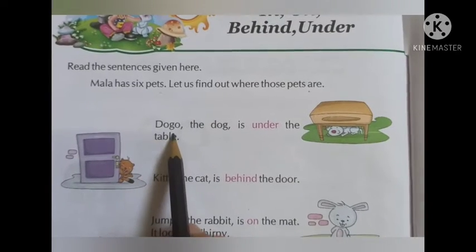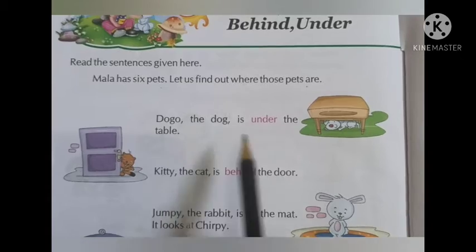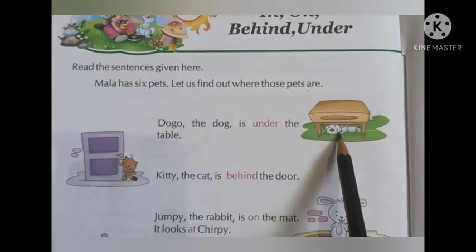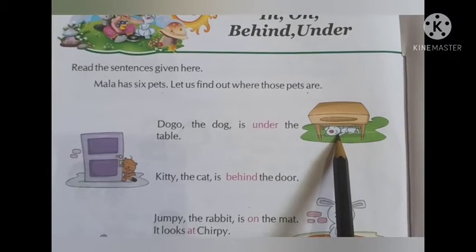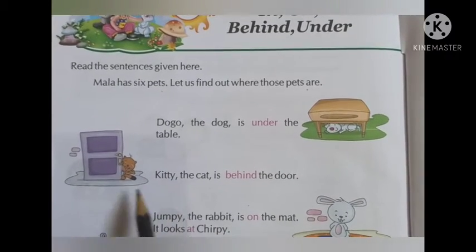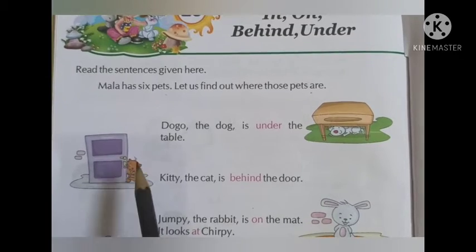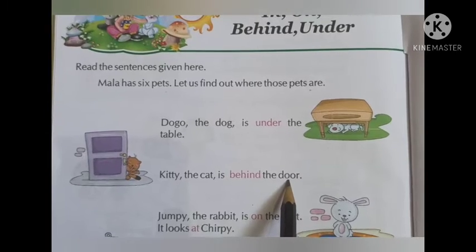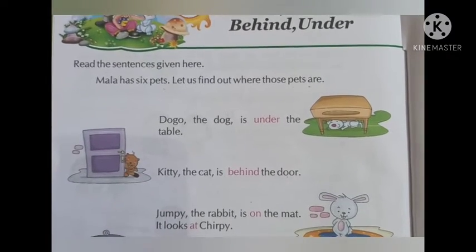First, you can see Dogo the dog is under the table. In this picture you can see the dog is sitting under the table — that is the position of the dog. In the second sentence, you can see a picture of a door and a kitten. Kitty the cat is behind the door — the position is at the back of the door.